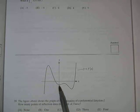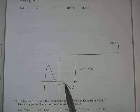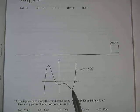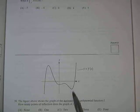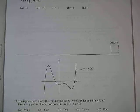Another one would be right there, another one there, another one there. So there are four times when the graph of this has a derivative of zero, which would make the second derivative of f equal to zero as well.